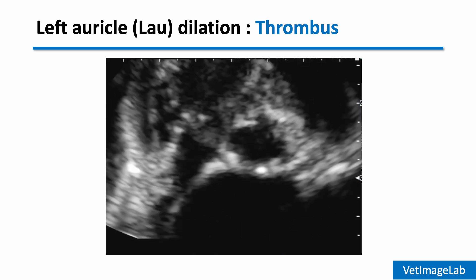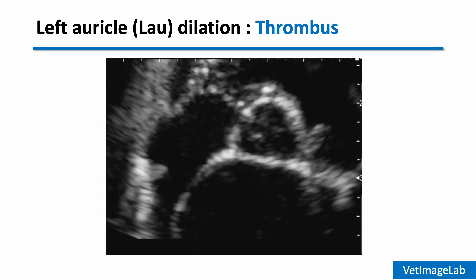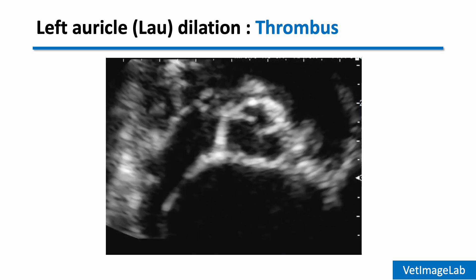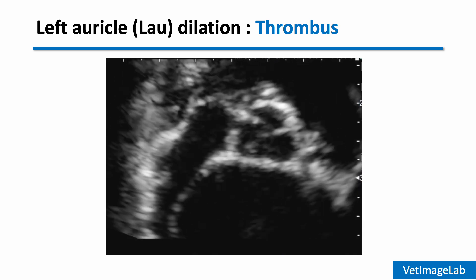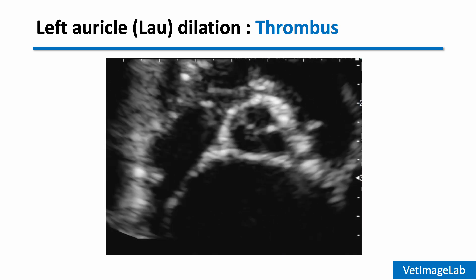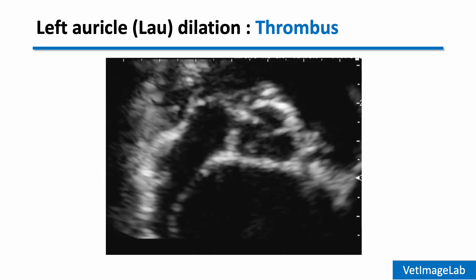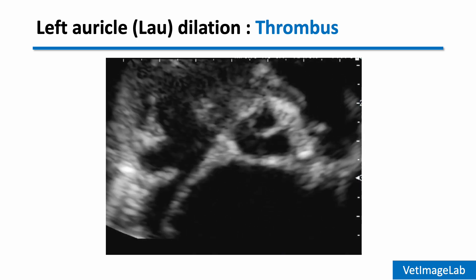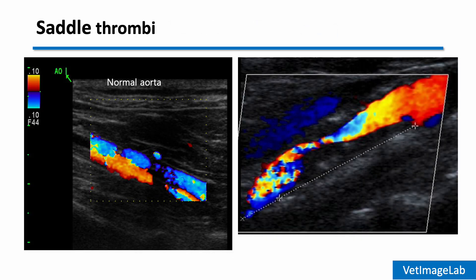Now let's look at an example of intracardiac thrombus. In this case, you can clearly see a distinct echogenic mass within the right atrium. A thrombus typically shows a well-defined solid appearance. Once a thrombus forms, it can dislodge and travel through the systemic circulation. One of the most critical sites for thromboembolism is the terminal aorta, where the saddle thrombus may lodge at the aortic bifurcation.